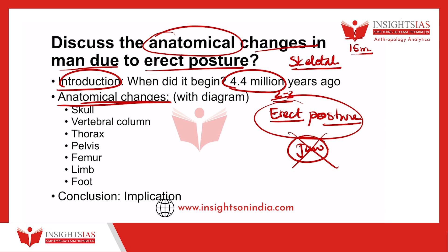In anatomical changes, always subdivide the answer into the following: whatever changes happen in the skull, the vertebral column, thorax, pelvis, femur, limb, and foot. You could also introduce the topic by noting that when you stand in an erect posture, you have to fight gravity, the internal organs are pushed down, and you need to see forward — so certain anatomical and structural changes are necessary to adapt to all these things.